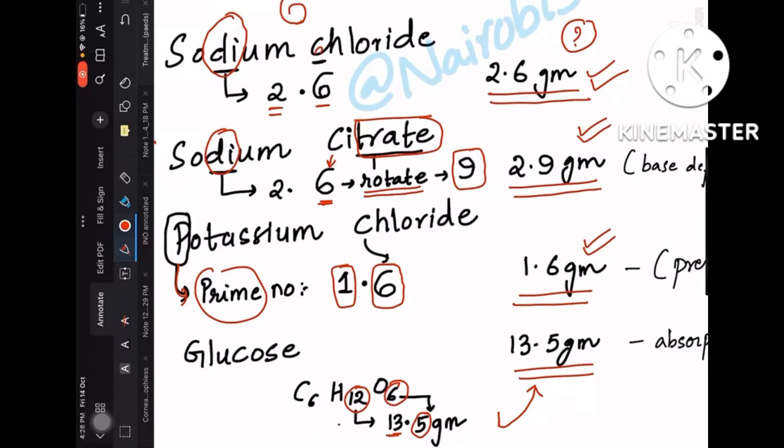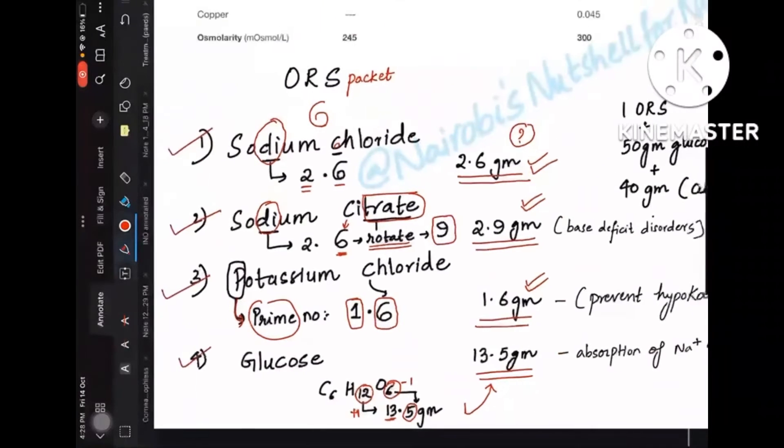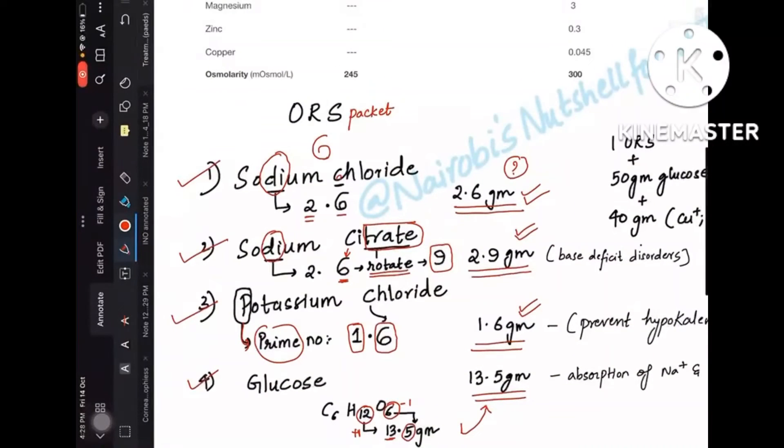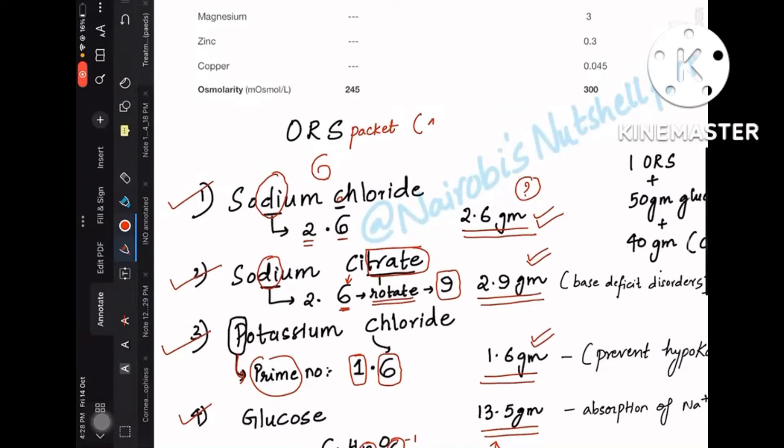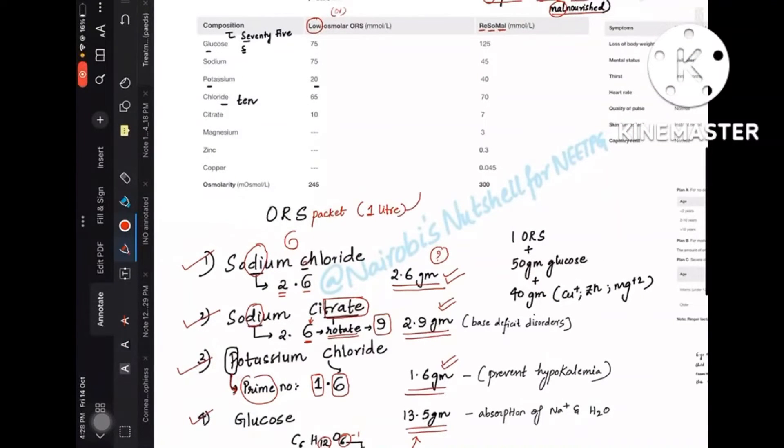I know this is a kind of tricky mnemonic only, but you can easily remember these values. All these grams are mixed in 1 liter of water, so this ORS packet is mixed in 1 liter of water so that you get the composition in millimoles per liter.